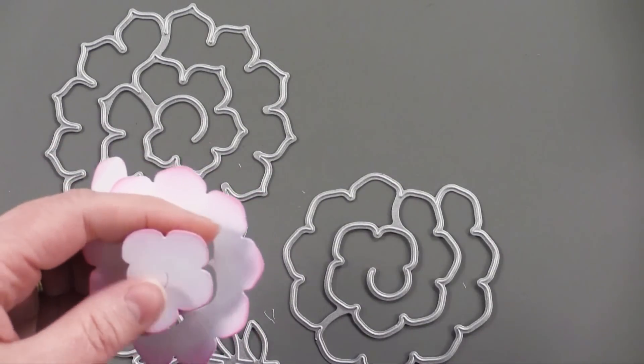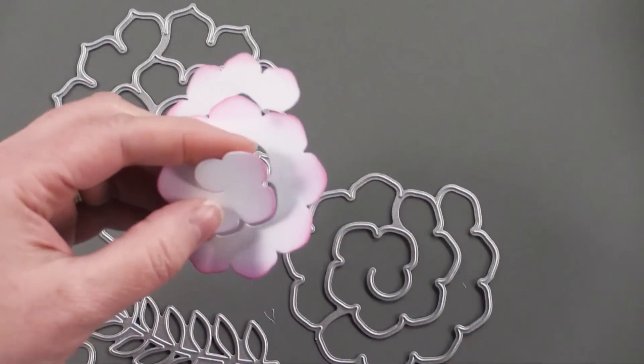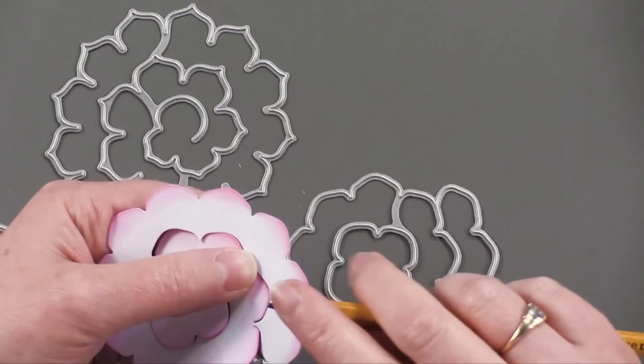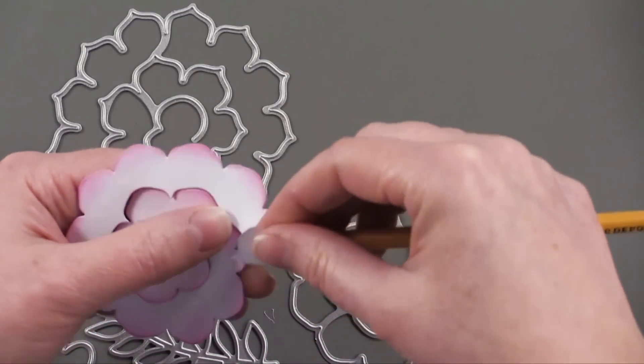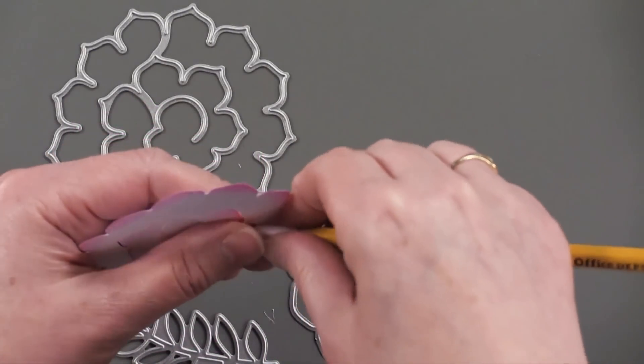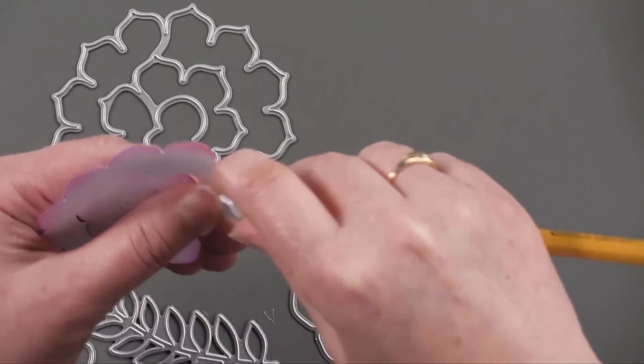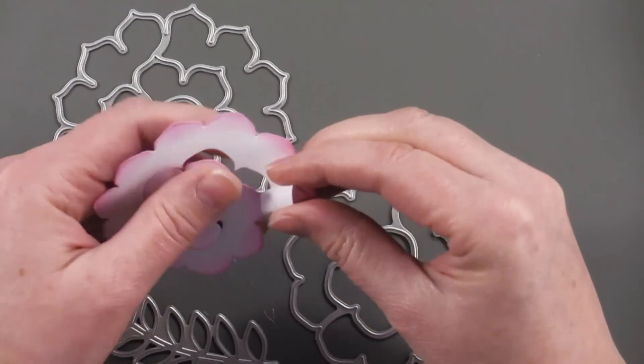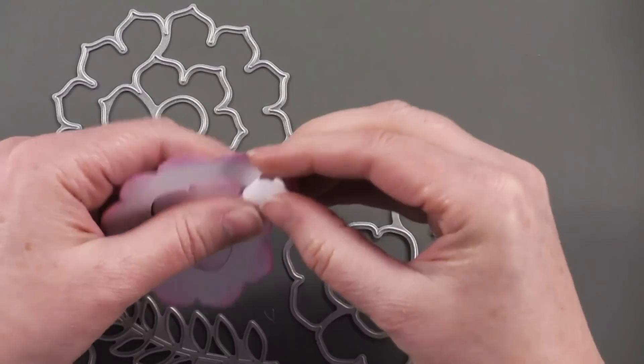And then what I do is you can just take really a pencil or anything to get your curve started here. You take the end and you're just wrapping it around a pencil or paintbrush handle, and that's just to get that going. And once I've got that going, I just roll along the swirl.